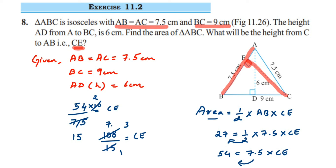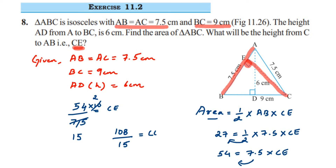The remainder is 3. Put a decimal point and bring down a 0 to get 30. 15 twos are 30, so we get 7.2. If you didn't understand the cancellation you can directly divide 108 by 15 and get the same answer. So CE equals 7.2.